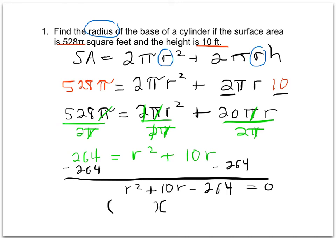The numbers that work for this, the factor pairs of 264, are 22 and 12. That may have taken a while to get, but if you play around enough, you'll get that. 22 times 12 equals 264. And then to get this positive 10, I would have a positive 22 and a negative 12. So when I factor that out, it's going to be (r + 22)(r - 12) = 0.